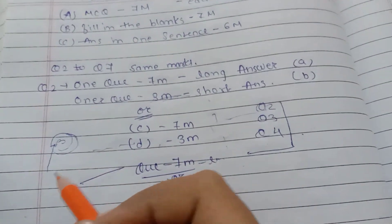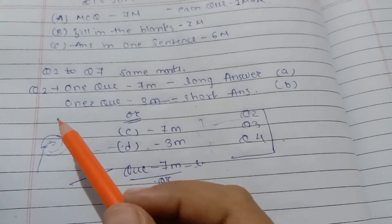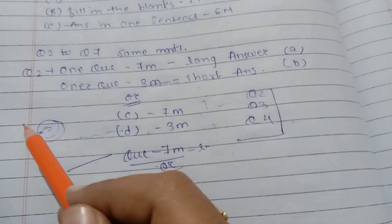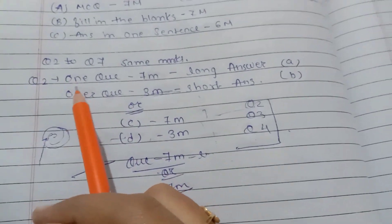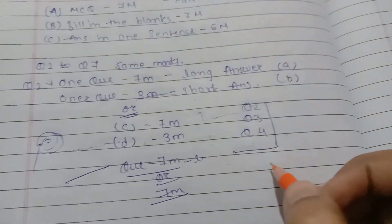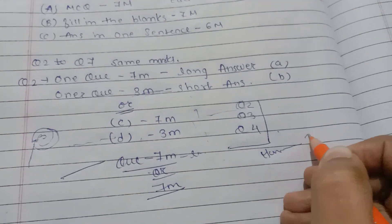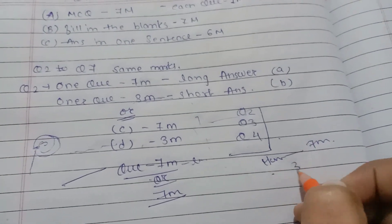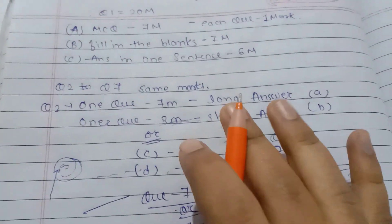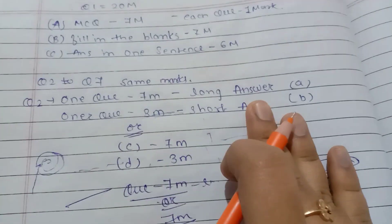For example, if you have studied human physiology and a question is asked about it — such as why blood is red — these things are covered in the chapter. Human physiology is worth 7 marks, so 3-mark and 1-mark questions within it are also covered. You need to read and prepare the important questions thoroughly.